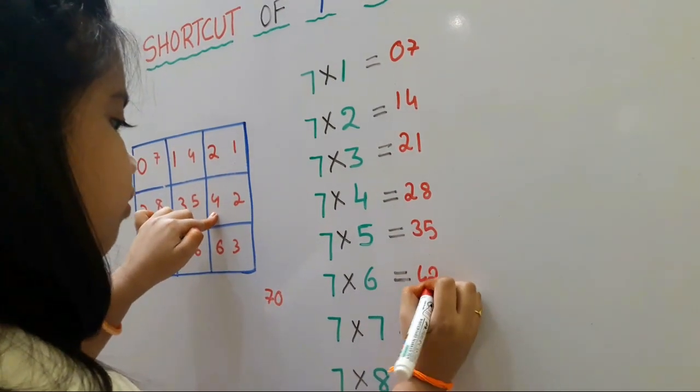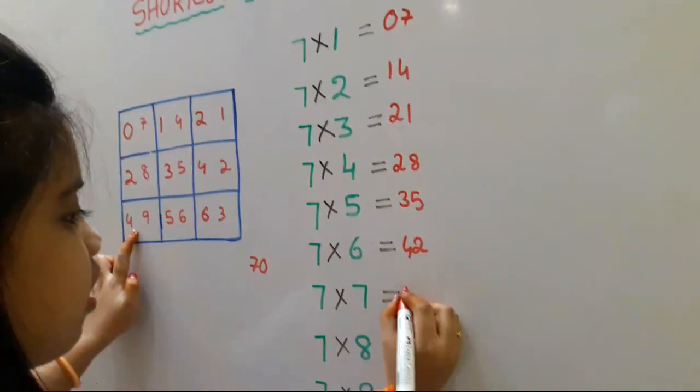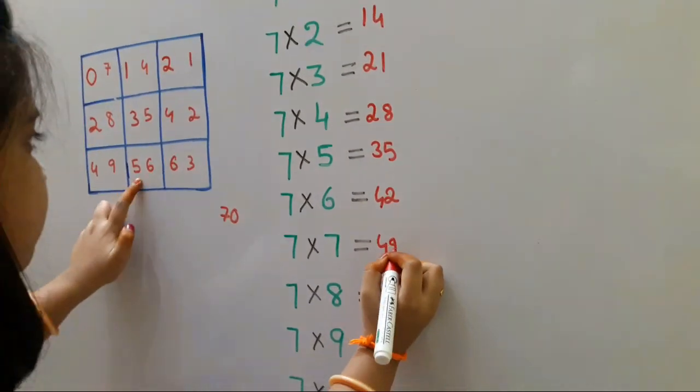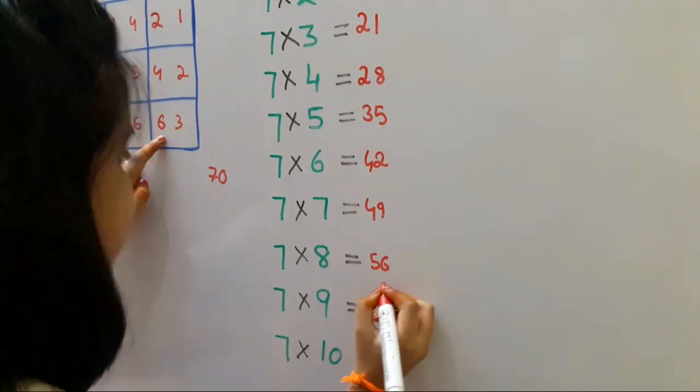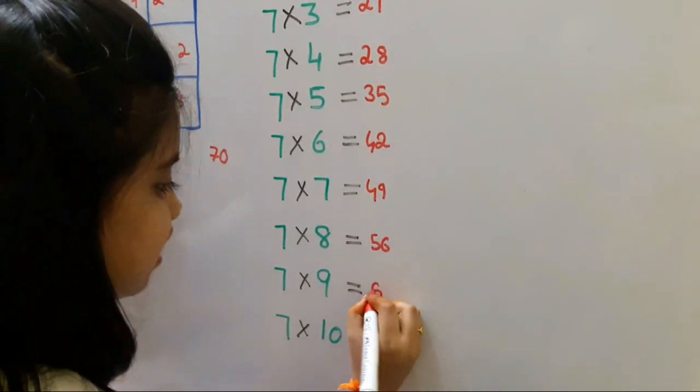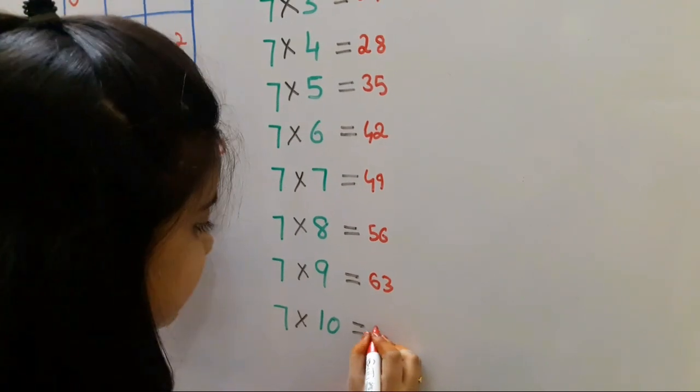7 sixes are 42. 7 sevens are 49. 7 eights are 56. 7 nines are 63. 7 tens are 70.